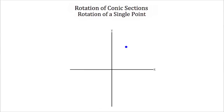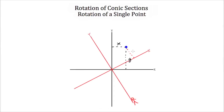Now before we can talk about rotating conic sections, let's talk about how we rotate a single point or the coordinates of a single point. Here I have a point and it has an x and y coordinate. This would be its x coordinate and this is its y coordinate. But imagine that when I had done this, I was standing over here, and when I measured, I measured a y coordinate and an x coordinate. Now I'm going to call this x prime and y prime to show that these coordinates are off this x prime and y prime axis, or this axis that's been rotated. The angle that this axis has been rotated I'm going to call theta.